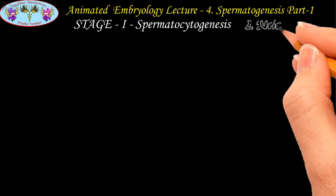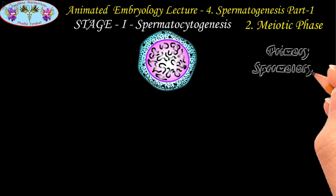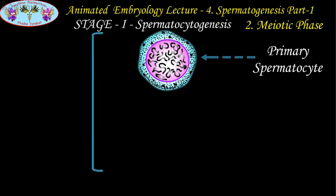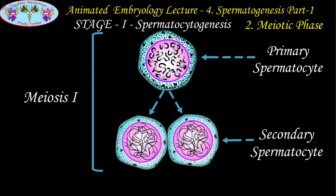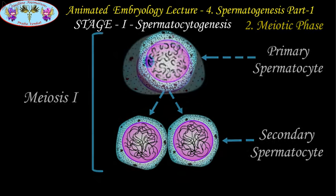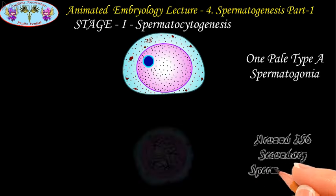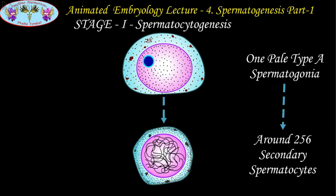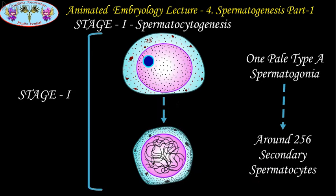The second sub-stage under spermatocytogenesis is the meiotic phase, which takes around 24 days. In this period, the diploid primary spermatocyte thus formed will complete the first meiotic division and give rise to two haploid secondary spermatocytes. At the end of stage 1, each pale type A spermatogonia gives rise to roughly around 256 secondary spermatocytes with the haploid number of chromosomes — that is 23 chromosomes — and the secondary spermatocyte thus formed has completed the first meiotic division and proceeds towards the second meiotic division.